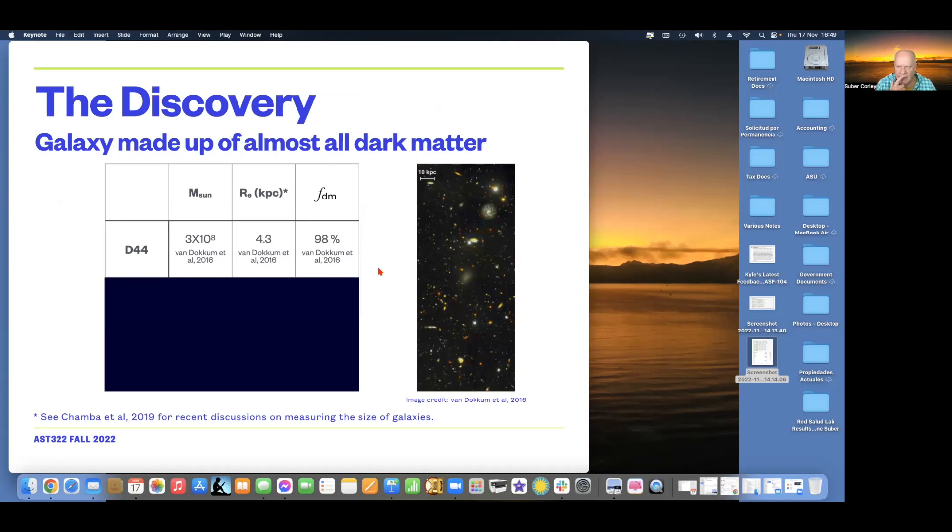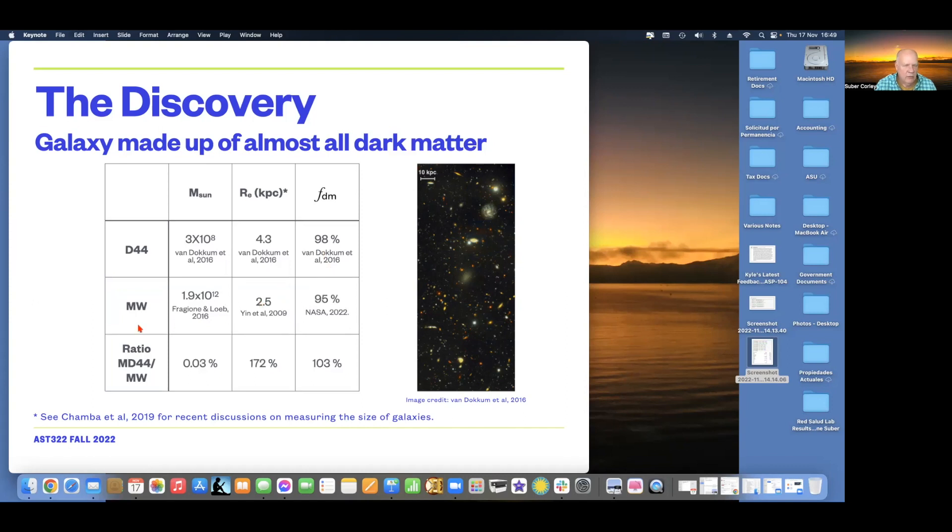So, getting back to the issue here, which was this astounding number here that we see for the amount of dark matter, the fraction of matter, all the matter that is in Dragonfly 44. Well, I'm going to take the cover off and share with you the Milky Way's stats. So, the Milky Way, this is, again, solar masses.